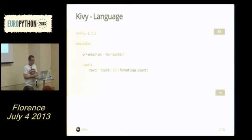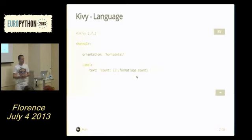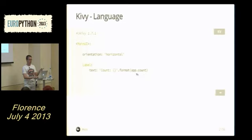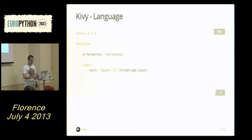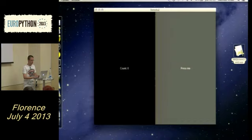There's something interesting: 'app' is a special keyword representing the current running application. So I'm accessing a property of the application, and when the property changes the Python expression is automatically re-evaluated and the label text updates in real time. I can add another widget like a button that increments the counter on press. I press the button, the label changes — very simple.